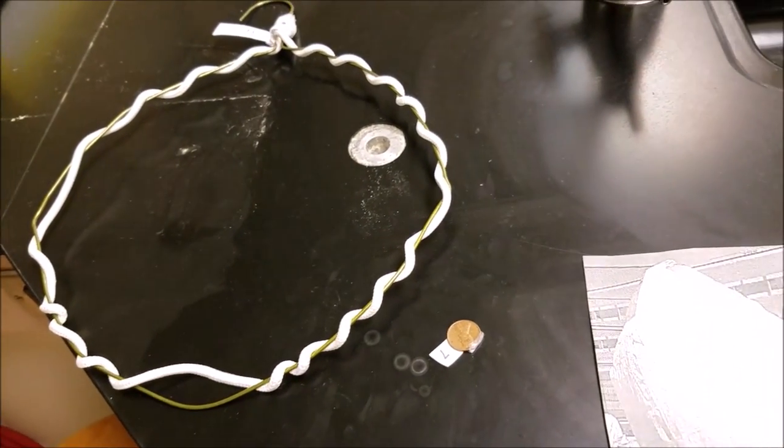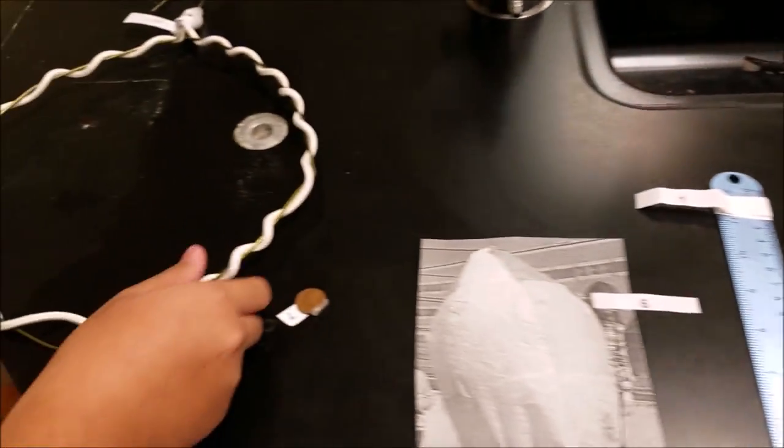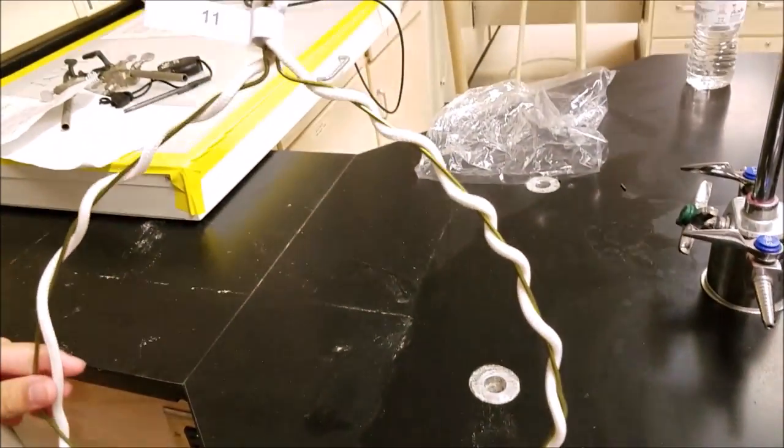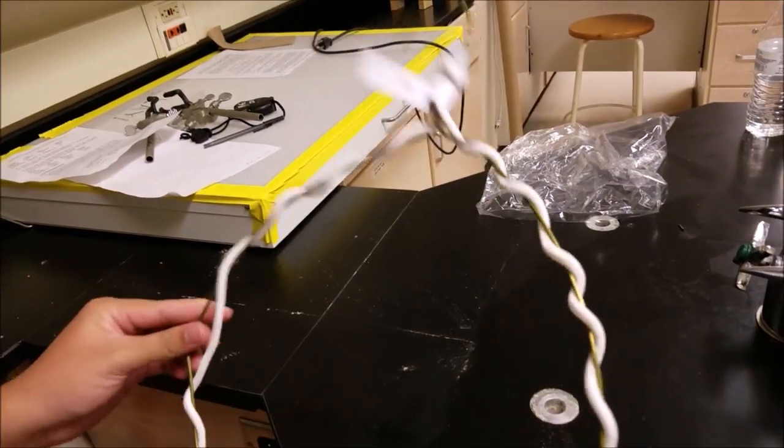So we have here some items that we used in previous labs we did in Mr. Fam's class. As you can see here, this was from lab 11, the coat hanger we used to make bubbles with.